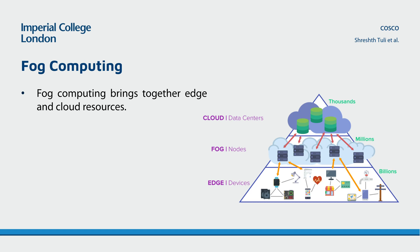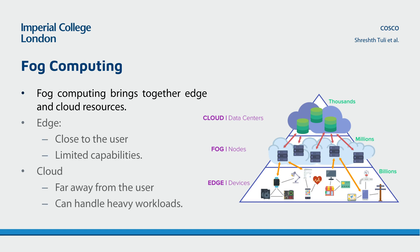But one might ask, why don't we process everything at the edge? Considering that there are perhaps billions of edge nodes in close proximity to the users with only thousands of cloud nodes accessible to all, it would become very expensive to run everything at the edge. Edge devices are often close to the user but have limited processing capacities, while cloud devices are far away but can handle much heavier workloads, giving rise to this research field on how to carefully balance task placement.